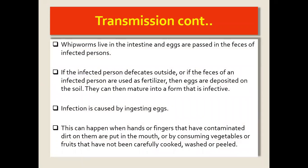The worms live in the intestines and the eggs pass through feces. If the infected person defecates outside, or if feces from an infected person is used as fertilizer, the eggs are deposited on the soil and can mature into an infective form. Infection is caused by ingestion of these infective eggs — either via contaminated hands put to the mouth, or by consuming vegetables grown in areas fertilized with fresh feces that were not cooked, washed, or peeled well.